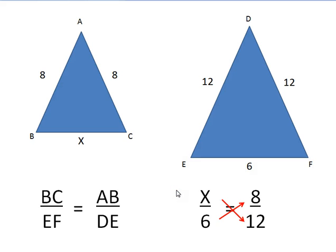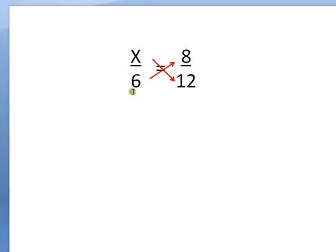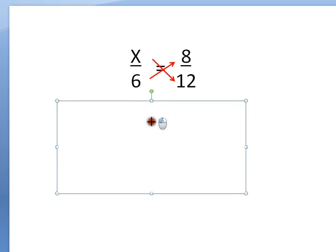Now, I have a proportion with an unknown number. Now, I put these red arrows here to show that I'm going to cross multiply to solve this problem. So let me go into the next one and let me show you. I'm going to go X times 12 and 6 times 8 because that's how I solve unknowns with proportions. I cross multiply.